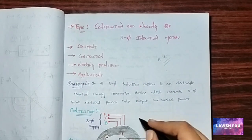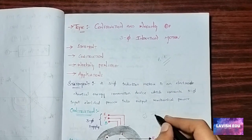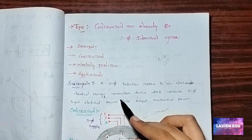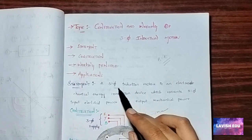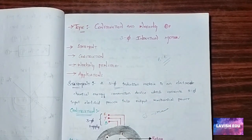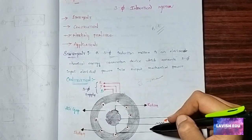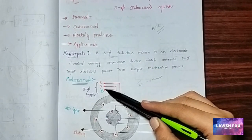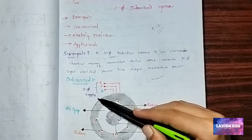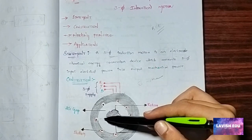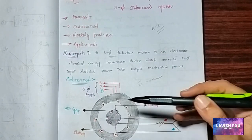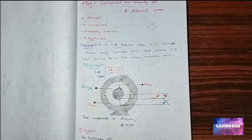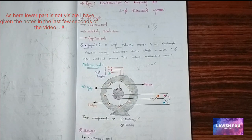Electromechanical energy conversion takes place in the three-phase induction motor. As you can see here, this is the construction of the three-phase induction motor, which has a three-phase RYB — the three-phase AC supply. An air gap is present between the stator and the inner body, which is called the rotor. To produce magnetic flux inside, we use the stator.